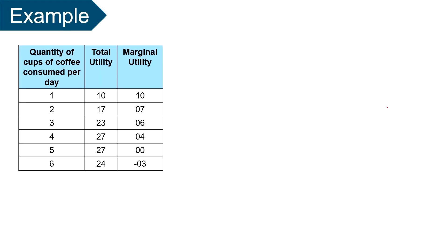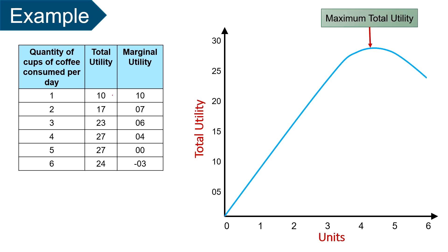Now we will take an example to understand the concept. First, we will look at total utility. With the given table you can observe that total utility from consuming two cups of coffee has risen to 17 utils, although the second cup added less — only 7 utils — to the total utility. As the consumer takes more cups of coffee, total utility continues to increase until the fourth cup, reaching 27 utils. But if the consumer has more than four cups, his total utility declines to 24 utils. As seen in the figure, maximum total utility is reached at a certain point, remains constant briefly, and then starts falling when the next cup is consumed.